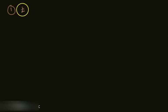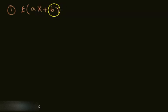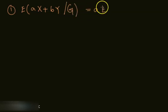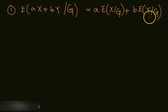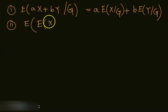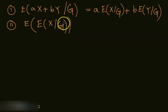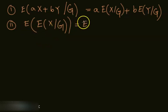Property one: expectation is a linear operator. E[aX + bY | G] = a·E[X|G] + b·E[Y|G], where X and Y are two random variables. Property two: E[E[X|G]] = E[X]. Since E[X|G] is itself a random variable, we can take its expectation, and it turns out to equal E[X].